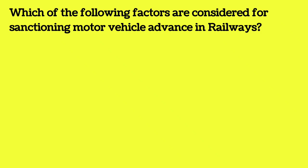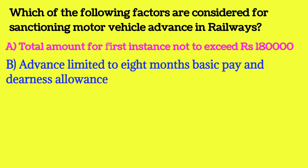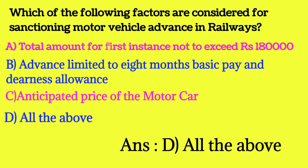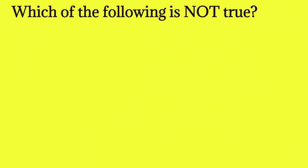Which of the following factors are considered for sanctioning motor vehicle advance in railways? Option A: total amount for first instance not to exceed Rs. 1,80,000. Option B: advance limited to 8-month basic pay and dearness allowance. Option C: anticipated price of the motor car. Option D: all of the above. The answer is all of the above.